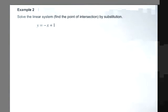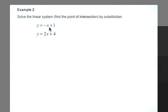So our next question: find the point of intersection for the linear system, y equals negative x plus 1, and y equals 2x plus 4, by using substitution.